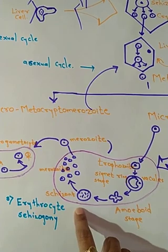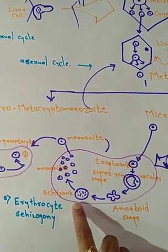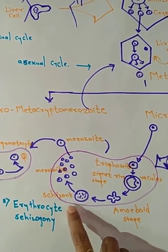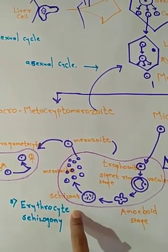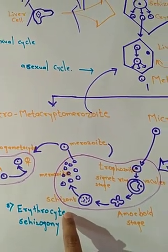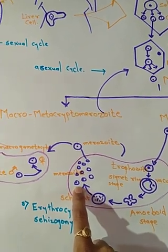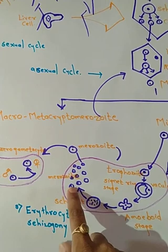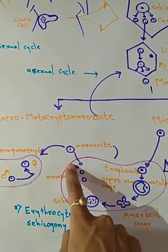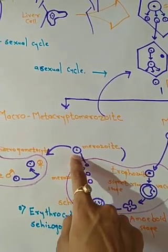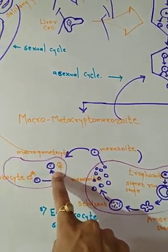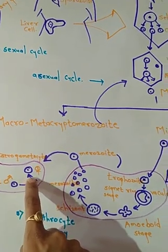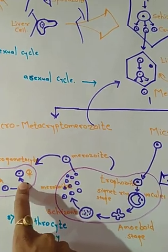Next, the structure becomes spherical and schizogony occurs — that is asexual reproduction — forming a lot of merozoites inside the RBC. The merozoites create pressure and the RBC ruptures. The merozoites then attack another RBC and continue the same process. Here, sexual reproduction begins.